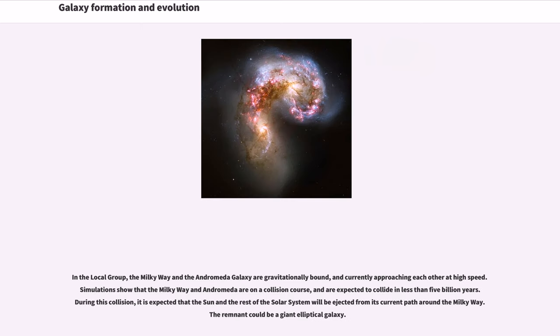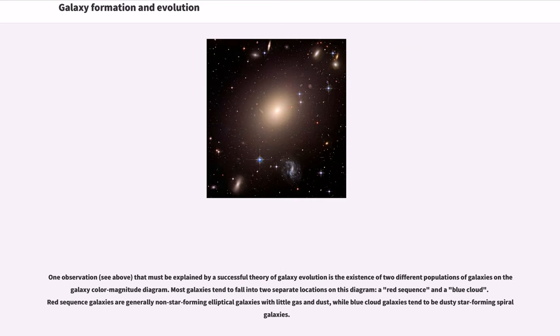In the Local Group, the Milky Way and the Andromeda galaxy are gravitationally bound and currently approaching each other at high speed. Simulations show that the Milky Way and Andromeda are on a collision course and are expected to collide in less than 5 billion years. During this collision, it is expected that the Sun and the rest of the solar system will be ejected from its current path around the Milky Way. The remnant could be a giant elliptical galaxy.